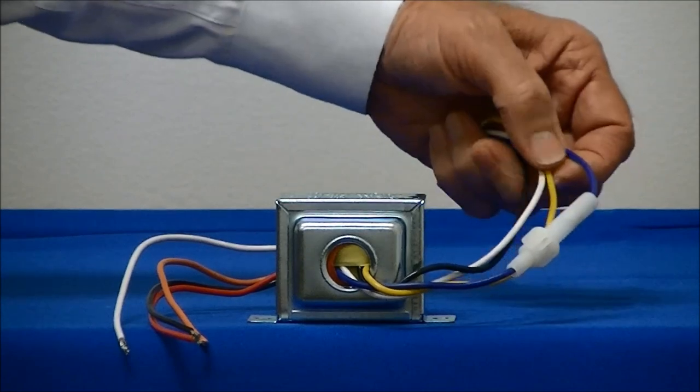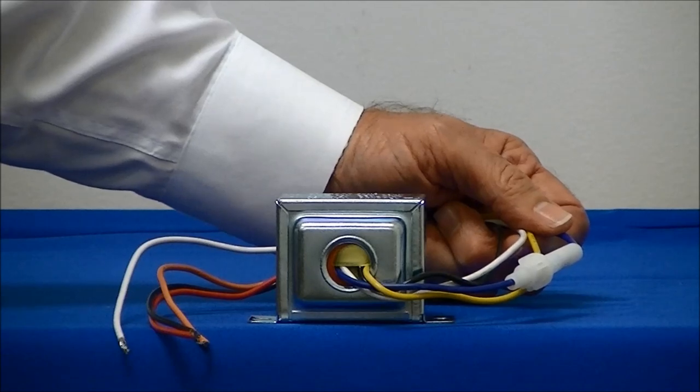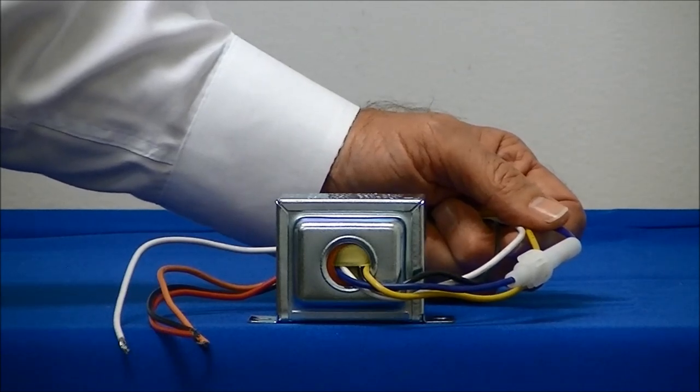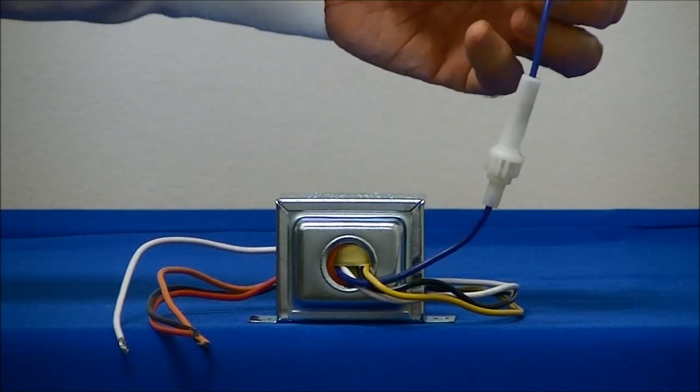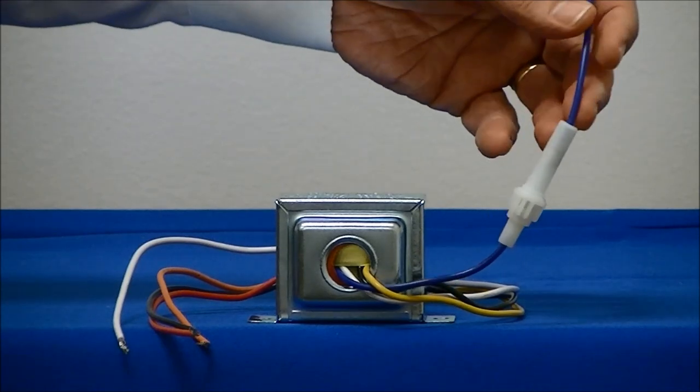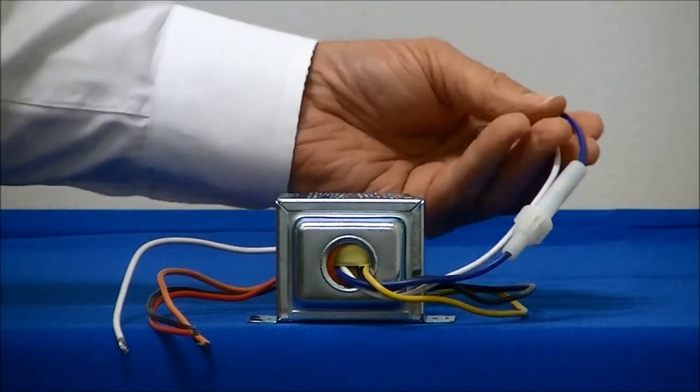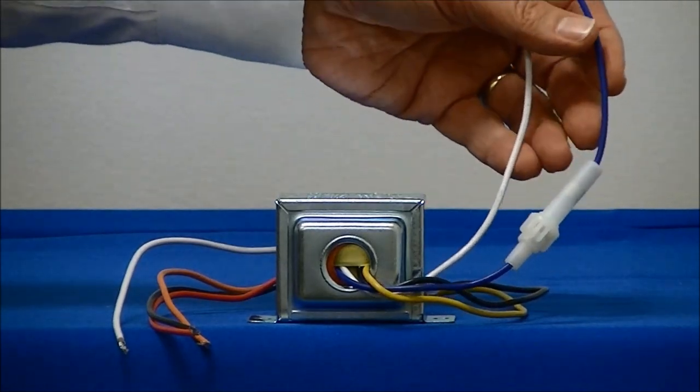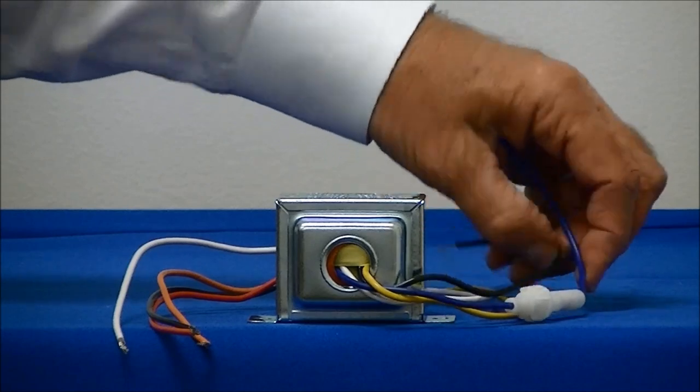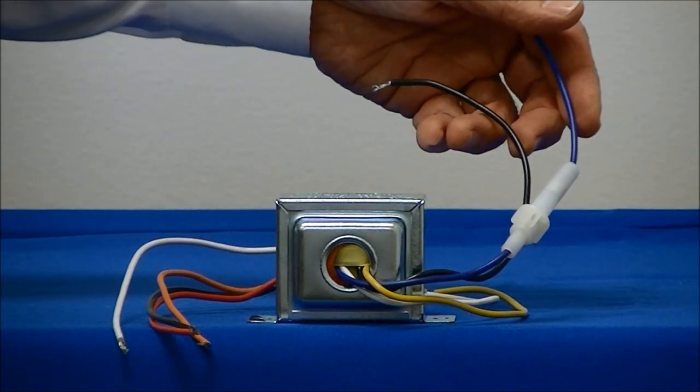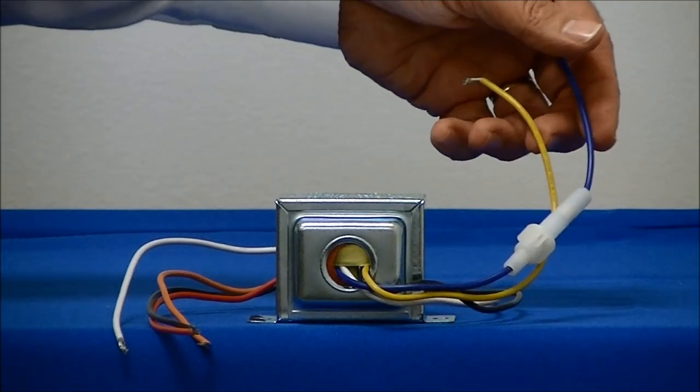The secondary voltages are 2.5 volts, 12 volts, and 24 volts. To use the different voltages on the secondary, the blue would be the common. To use this for 2.5 volts, we would use the blue and the white lead. To connect this for 12 volts, we would use the blue and the black lead. To connect for 24 volts, we would use the blue and the yellow lead.